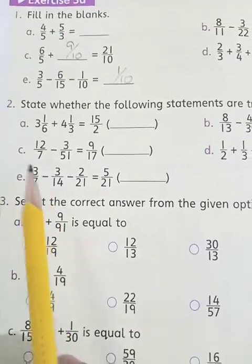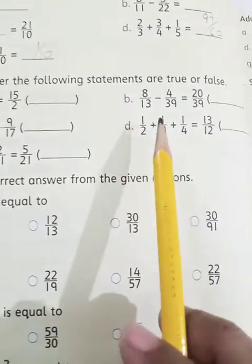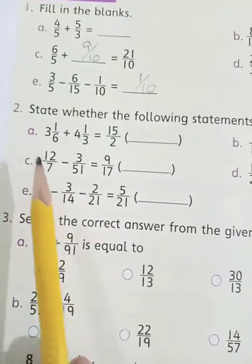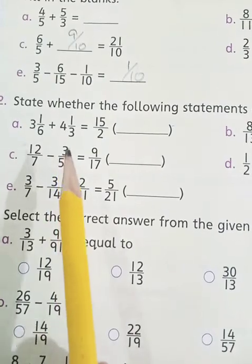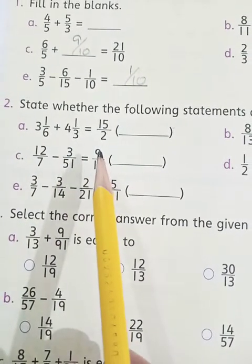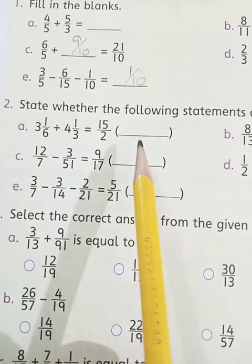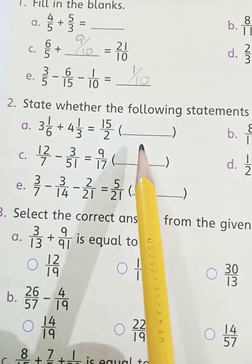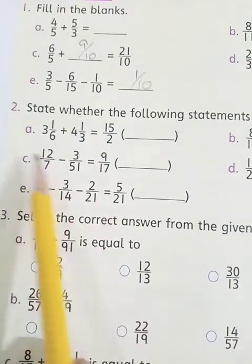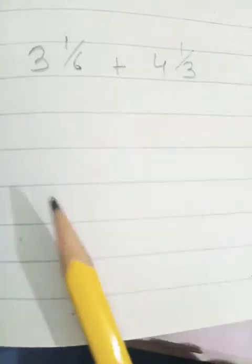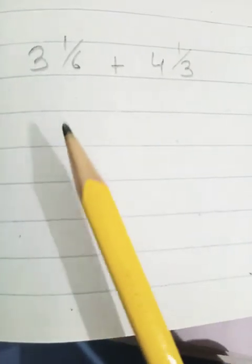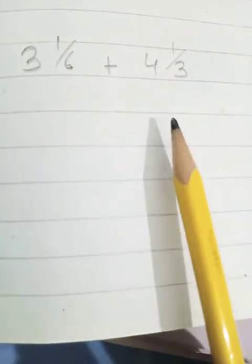Now come to question number 2. State whether the following statements are true or false. Part a: 3 whole number 1 upon 6 plus 4 whole number 1 upon 3 equals 15 upon 2. And we have to mention here that is it true or false. How we can mention? First we have to solve this. So let's solve it. We have copied down the question. 3 whole number 1 upon 6 plus 4 whole number 1 upon 3.